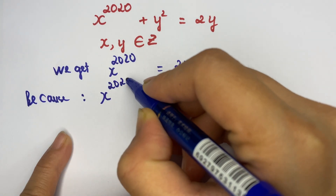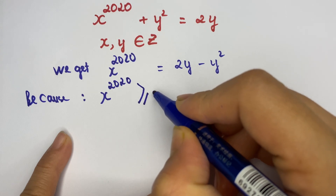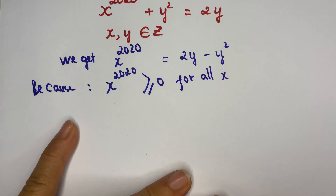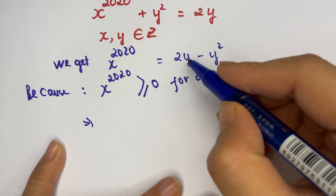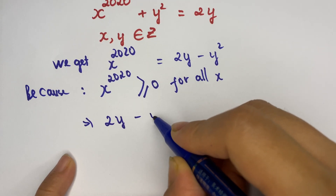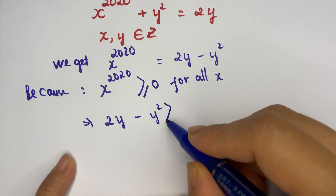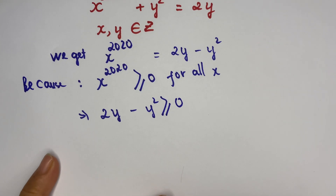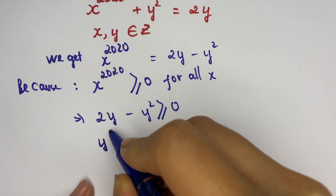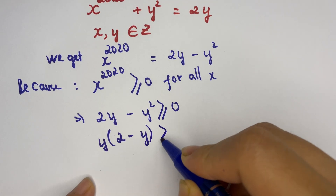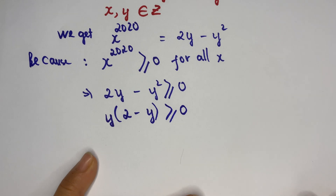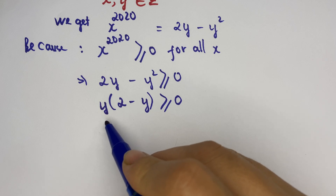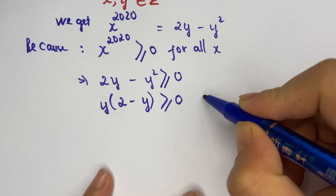Everyone can see that x to the power 2020 is greater than or equal to zero for all x. Therefore, on the right hand side we also have 2y minus y squared is greater than or equal to zero. You can rewrite this as y times (2 minus y) is greater than or equal to zero.